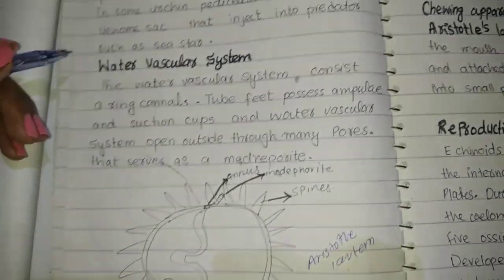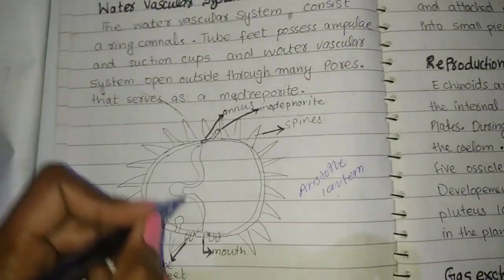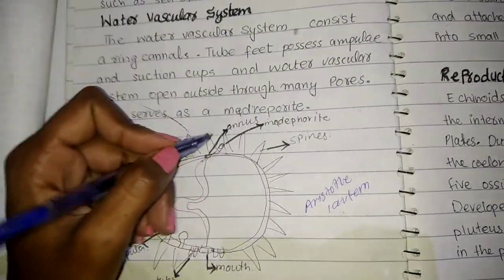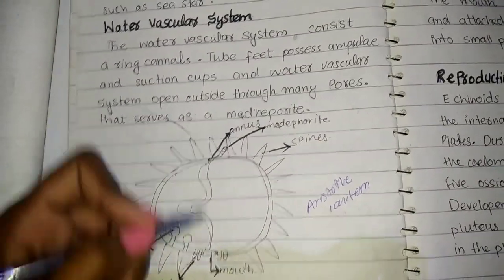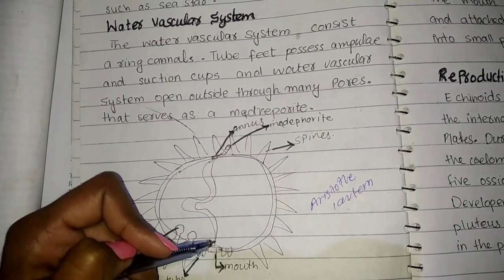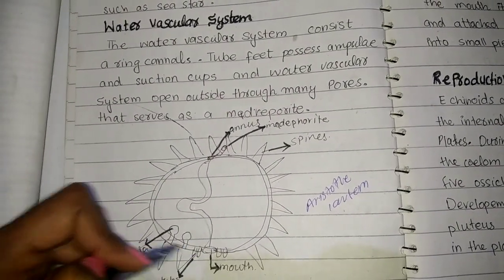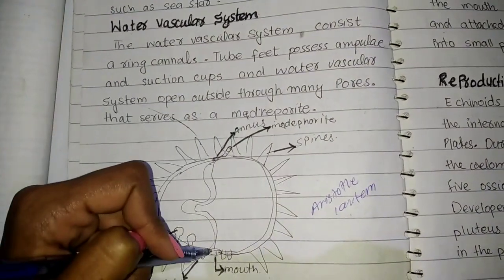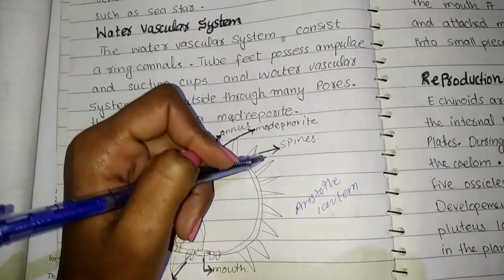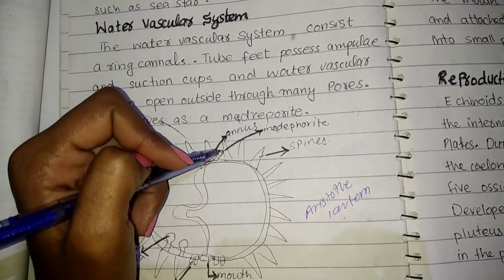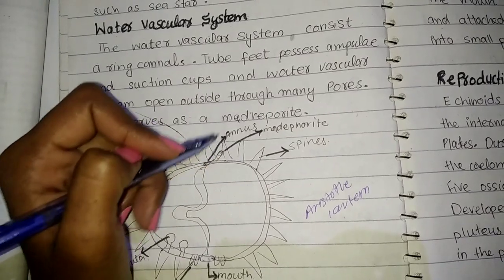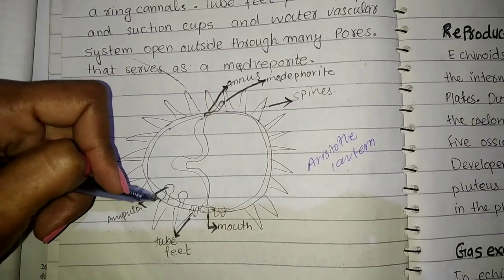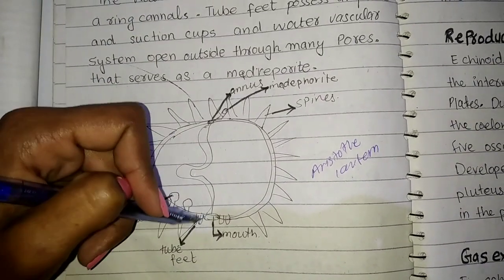The next heading is the water vascular system. Looking at this diagram, we can see many spines, the anus, the oral side toward the substrate, and the digestive system. There is a madreporite plate present, along with the ampulla and tube feet, which are present near the mouth.